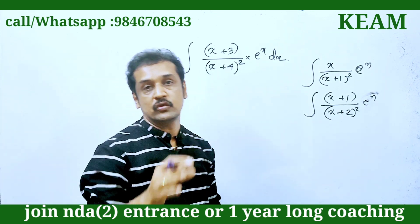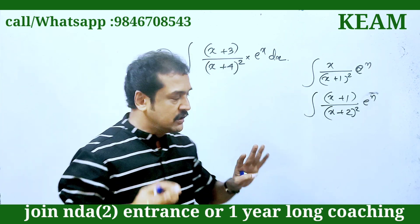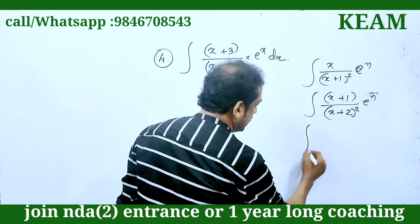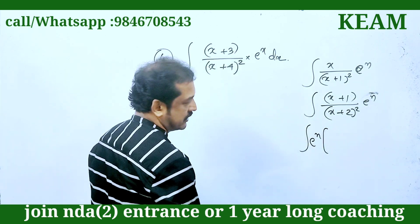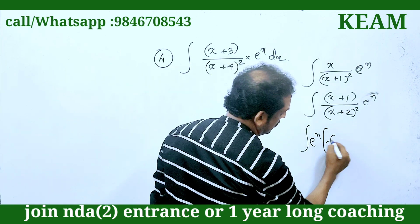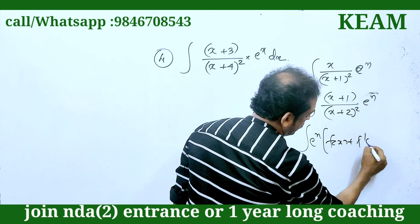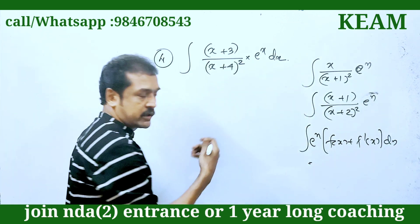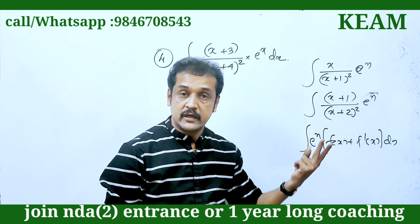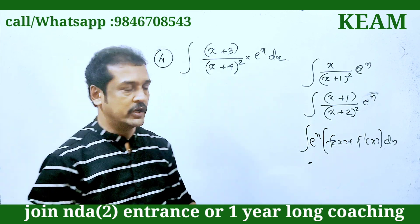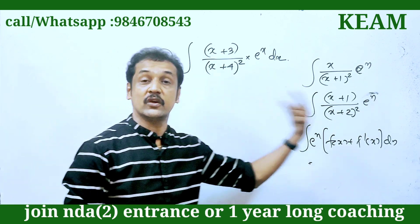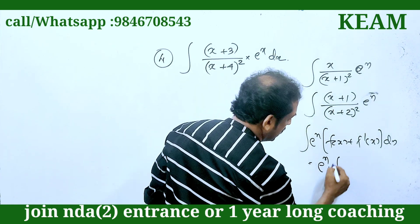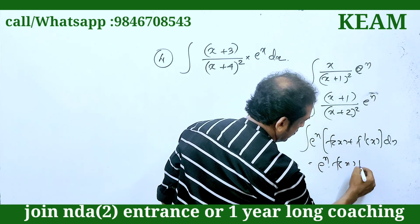Let's look at these types of problems. The standard result is: integral of e^x into [f(x) + f'(x)] dx equals e^x·f(x). Here e^x is bracketed with the variable and its derivative: if the integrand has f(x) and f'(x) together, the answer is simply e^x·f(x).